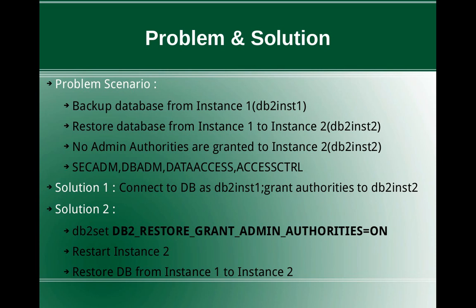What is the solution? The first solution is you connect to the DB as the DB2INST1 user and manually issue grant statements to grant the specific authorities to user DB2INST2. But the limitation is that if instance one is on a different AIX machine and instance two is on a different AIX machine, you have to create the user DB2INST1 on your instance two server. That's the limitation.